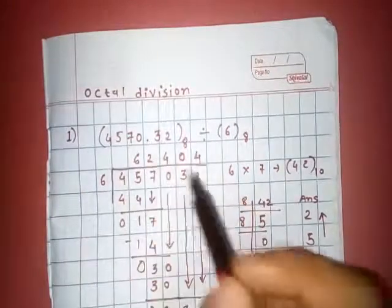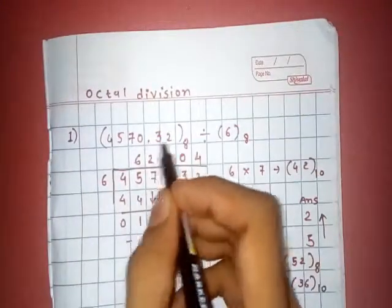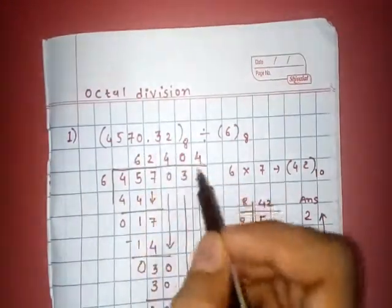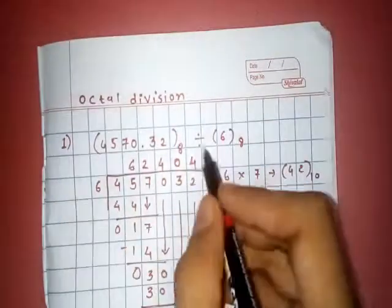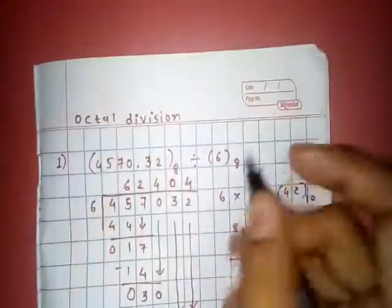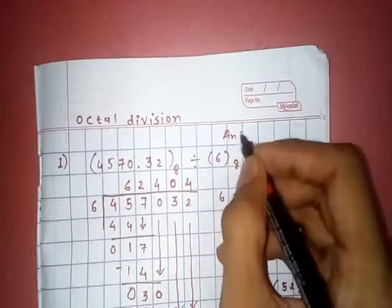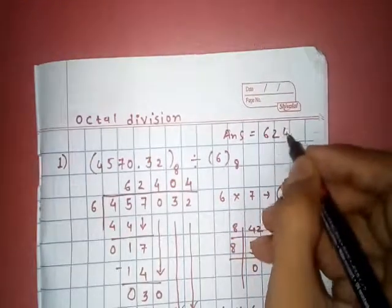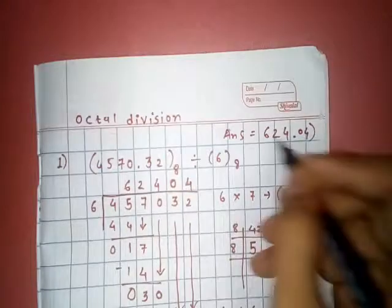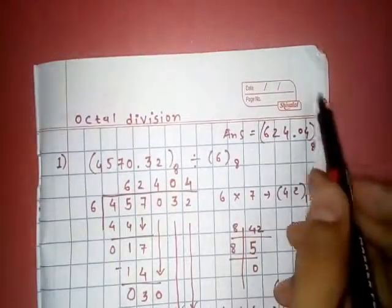This is the last answer that we get with two decimal places, so we can write it this way. Answer is equal to 624.04 in octal value, and this is the basic way to do octal division.